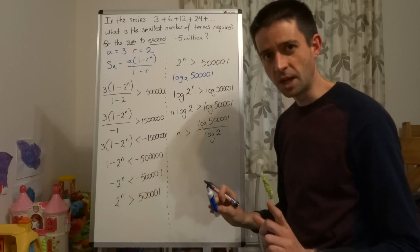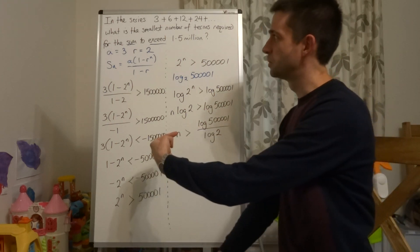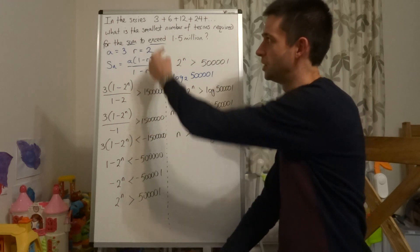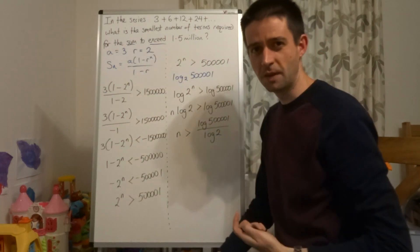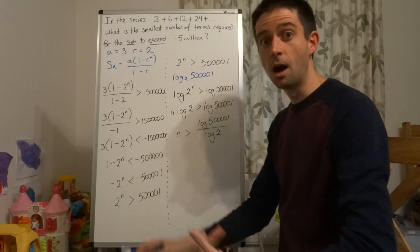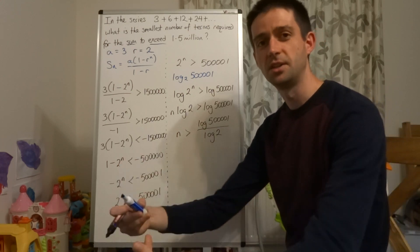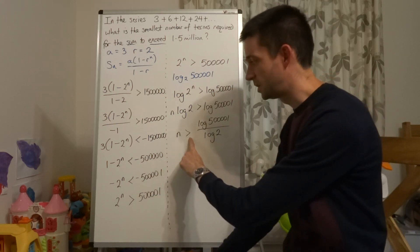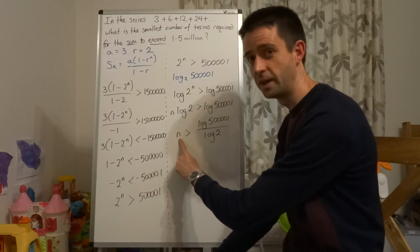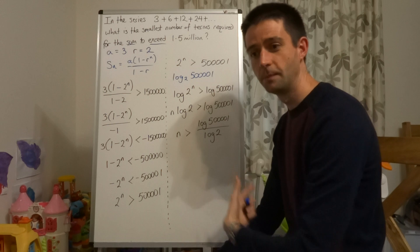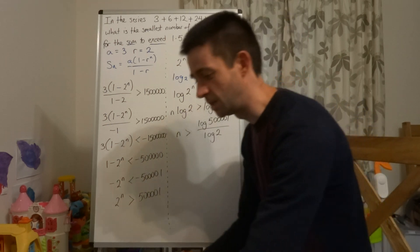Now let's just pause for a minute to check that this is sensible. We've been asked for the number of terms required to exceed a certain value. Now you would expect that to be after we've had a certain number of terms, so more than this number of terms. And this inequality is saying that n, the number of terms, is more than this number. So we're happy with that. That makes sense at this stage.